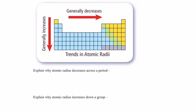We just finished talking about the periodic property of atomic radius. Now if I gave you four elements on the periodic table, you should be able to arrange them in order of increasing atomic radius. Let's practice. We have element A, element B, element C, and element D - four elements chosen from different positions on the periodic table.